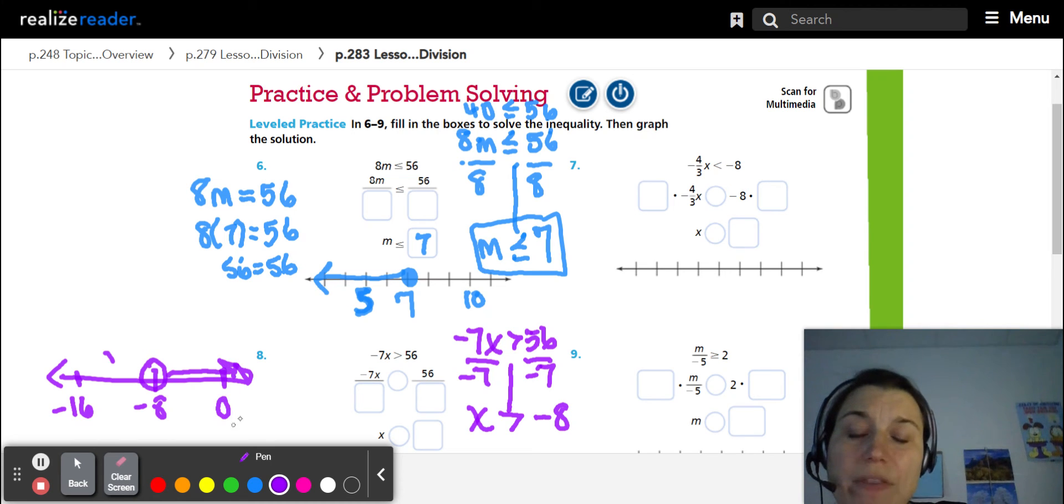But this time when I put this in here, if I put zero in here, I'm going to think, yeah, I'm right. Zero is greater than negative eight. But let me put zero all the way back in my original problem. If I do negative seven times zero, is that greater than 56? Well, negative seven times zero is zero, and zero is not greater than 56.